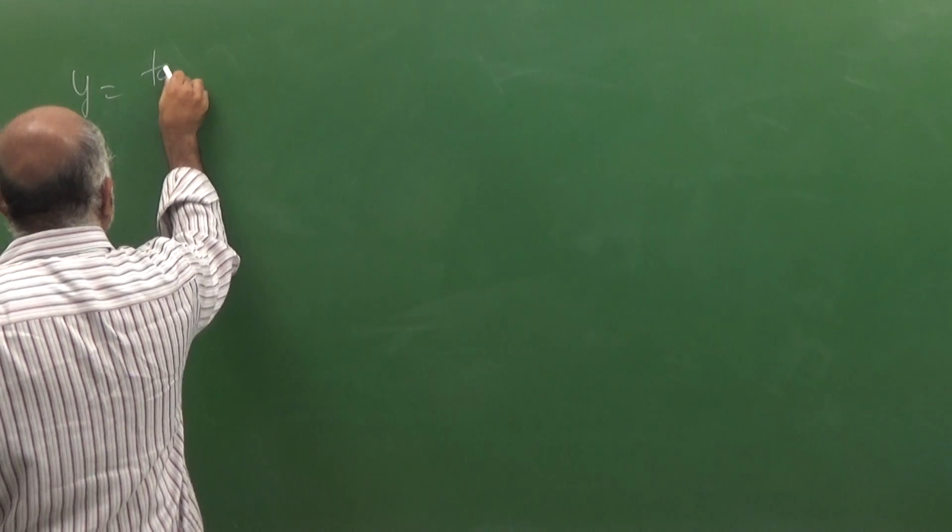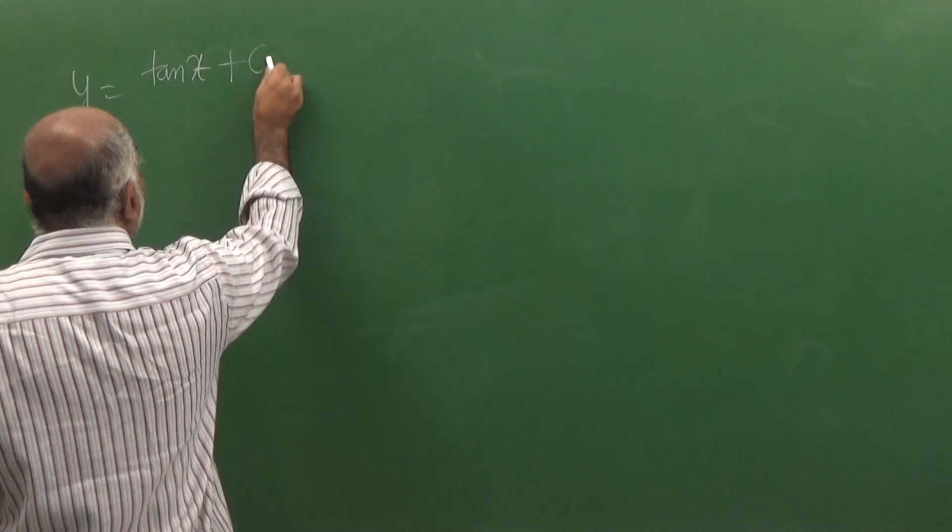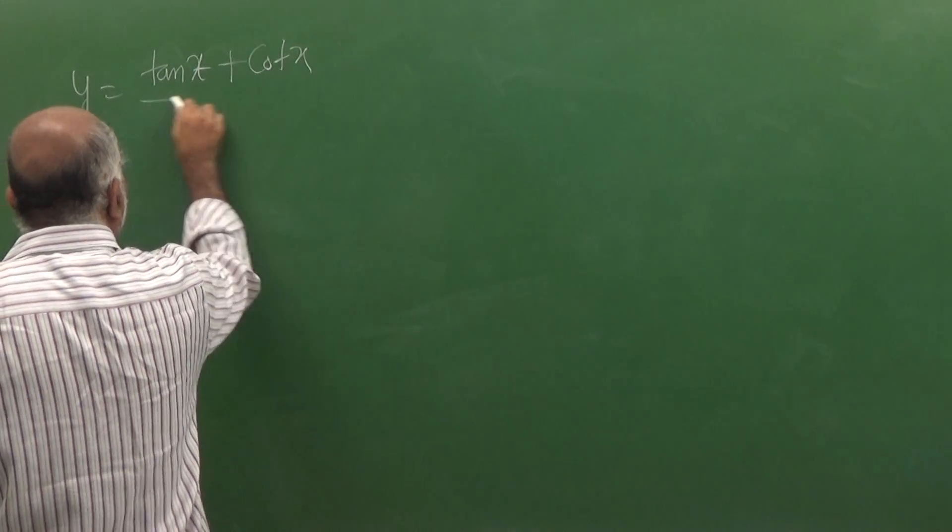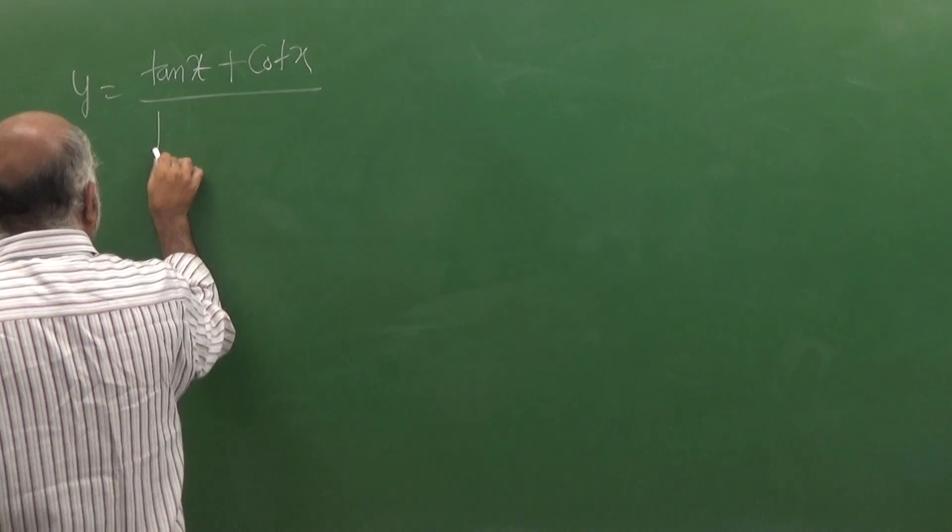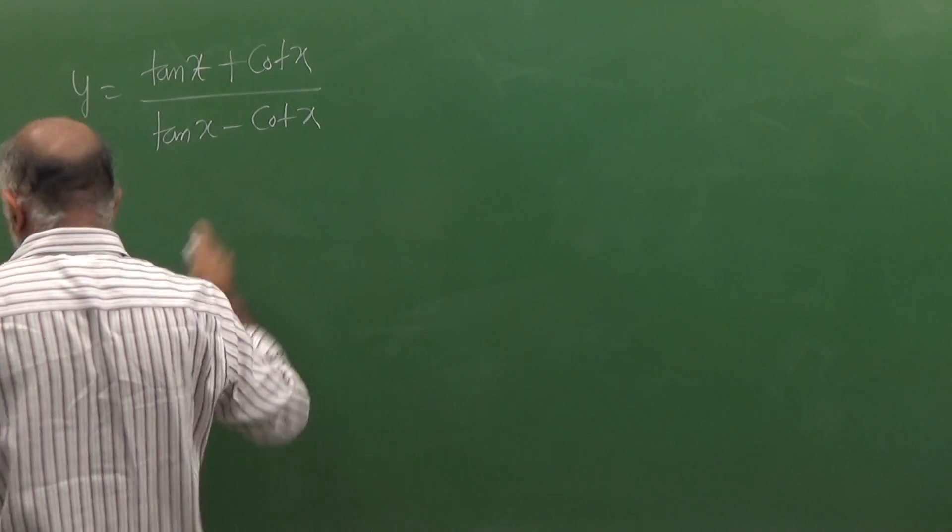y is equal to tan x plus cot x divided by tan x minus cot x.